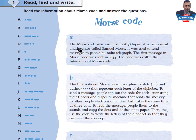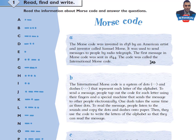Part A. The Morse code was invented in 1838 by an American artist and inventor called Samuel Morse. It was used to send messages to people by radio telegraph. The first message in Morse code was sent in 1844. The code was called the International Morse code.